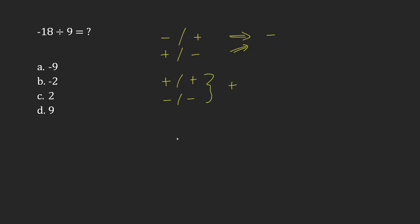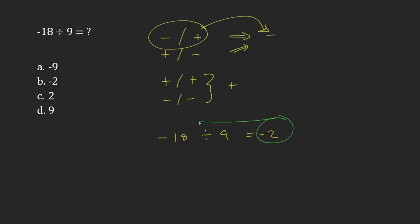So it's negative 18 divided by 9. 18 divided by 9 gives me 2, and it has to be negative 2 because I have a negative and a positive — mixed signs — leading to a negative result. So my answer here is b, negative 2.